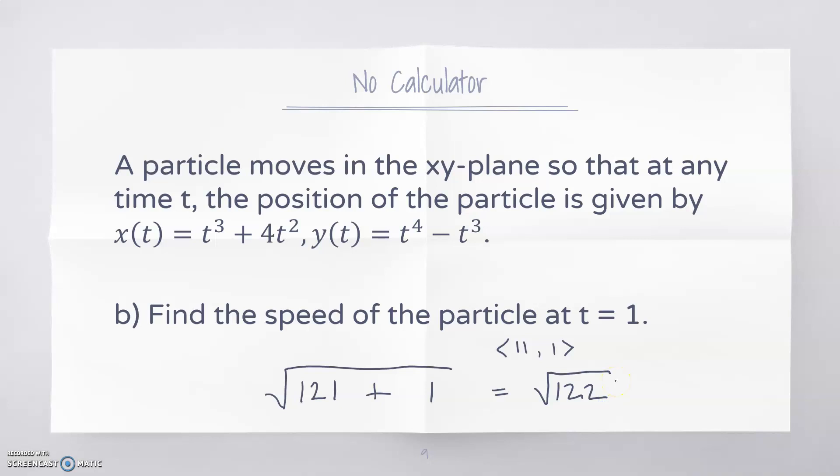I don't know exactly what number that is, but I could grab that on a calculator. It's going to be a little bit more than 11, which makes sense. The particle is mostly moving at a rate of 11 meters per second or whatever our units are, but it's also moving up a little bit, so it's going to have a little bit more speed than just 11.